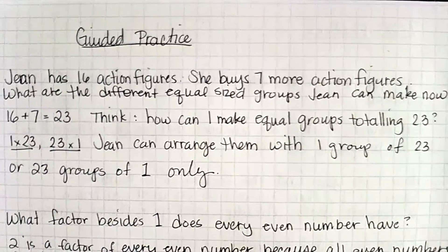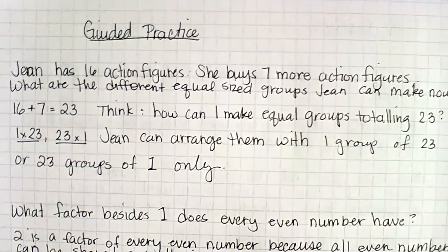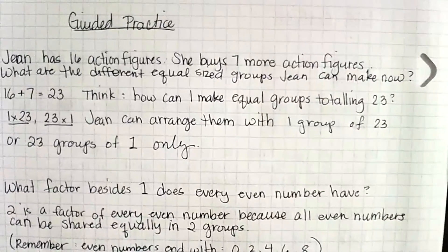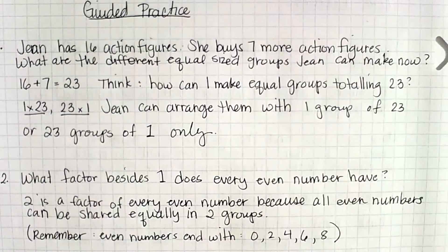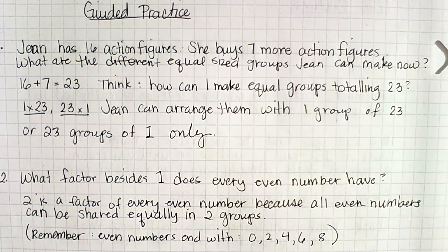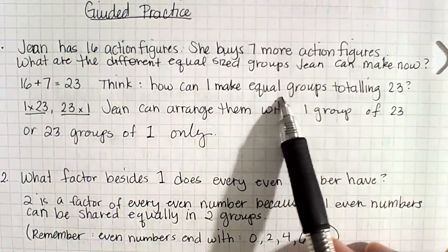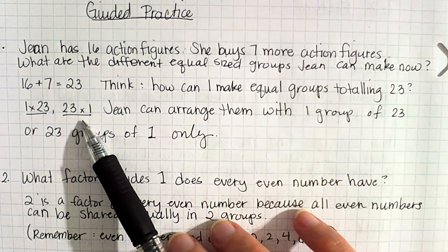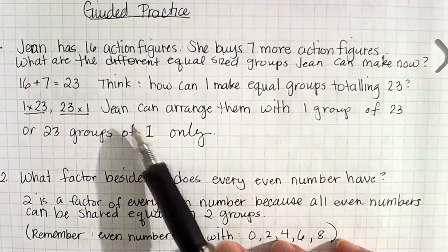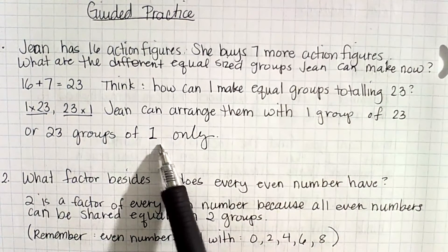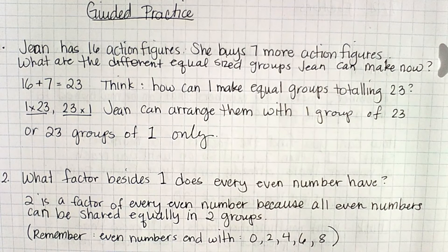Guided practice question 1: Jean has 16 action figures. She buys 7 more. What are the different equal size groups she can make now? First, the hidden question: how many does she have altogether? 16 plus 7 is 23 action figures. How can I make equal groups totaling 23? I can do 1 and 23 and 23 and 1, but there's no other way. So Jean can arrange them with one group of 23 or 23 groups of 1 — those are the only two ways.